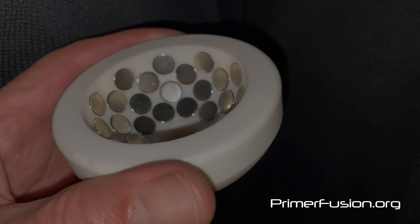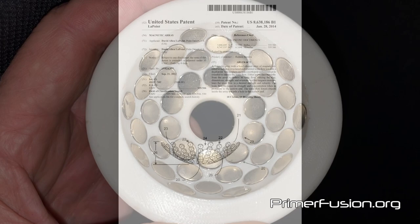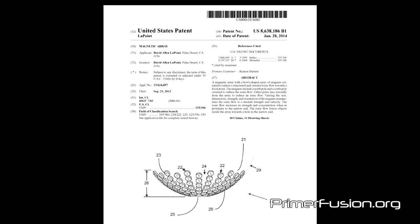The critical breakthrough that led to the primerfusion concept was the development of these simple, bowl-shaped magnetic arrays. The United States Patent and Trademark Office granted a patent in 2014 that covers these magnetic arrays.